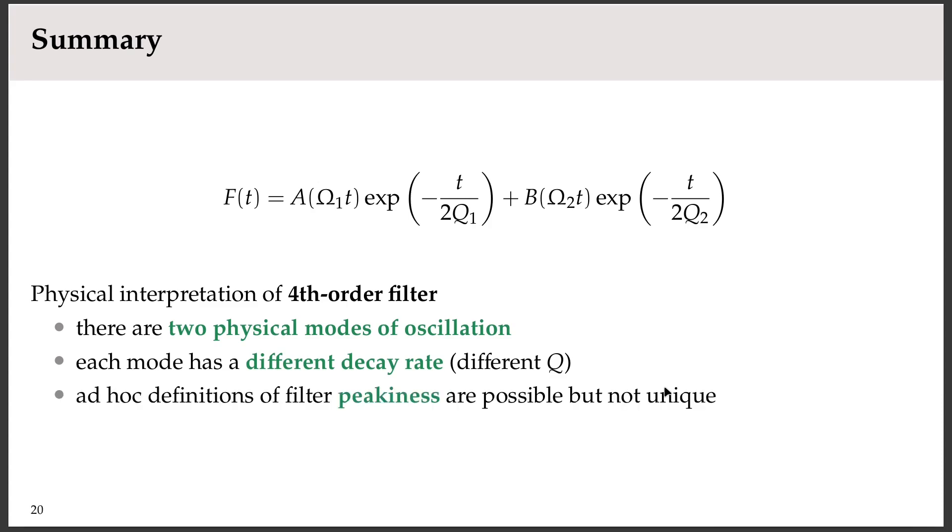Now, I showed you a picture of the second order filter, and it had this peak on it for the higher q. And certainly, higher order filters can also be peaky, and you may want to develop an ad hoc definition of filter peakiness, and that's okay. But these aren't unique definitions. The q or the so-called pole q of second order and fourth order filters, that's a rigorous definition, and you get one q for every second order section.